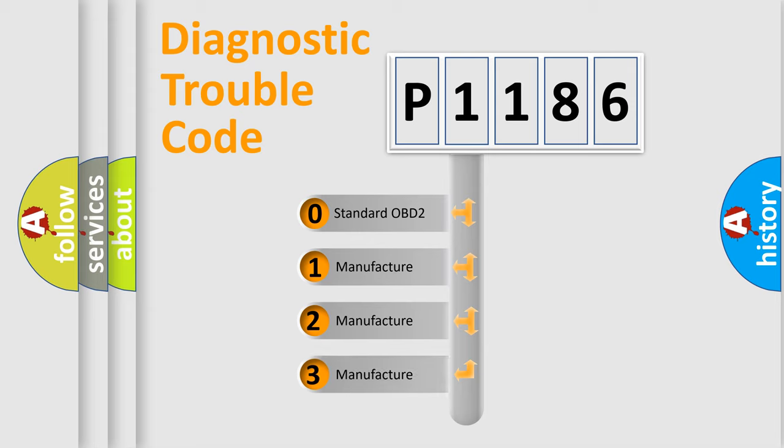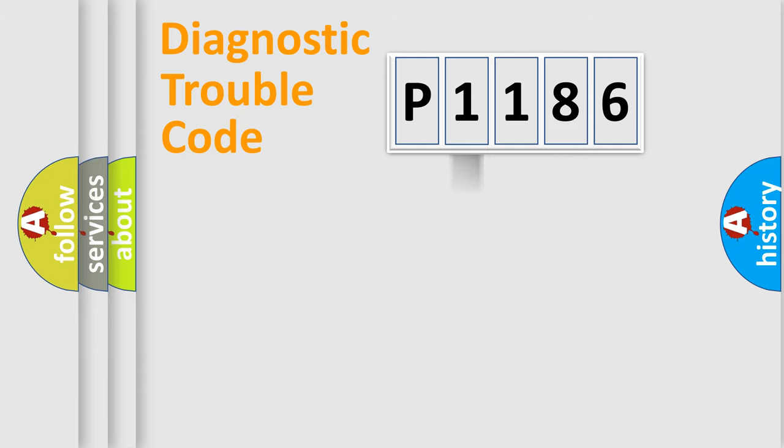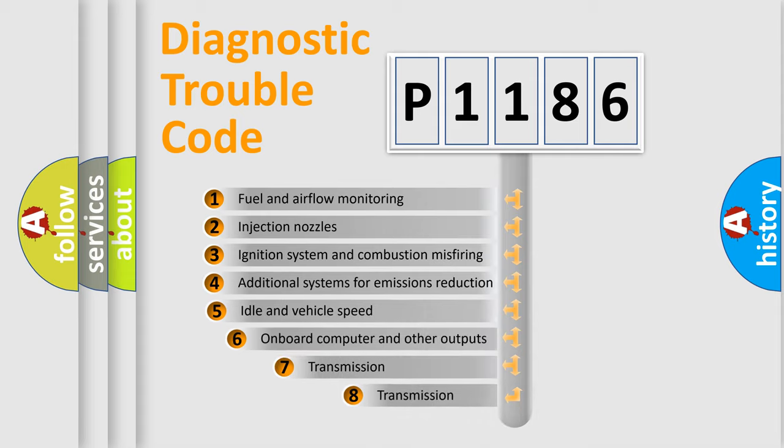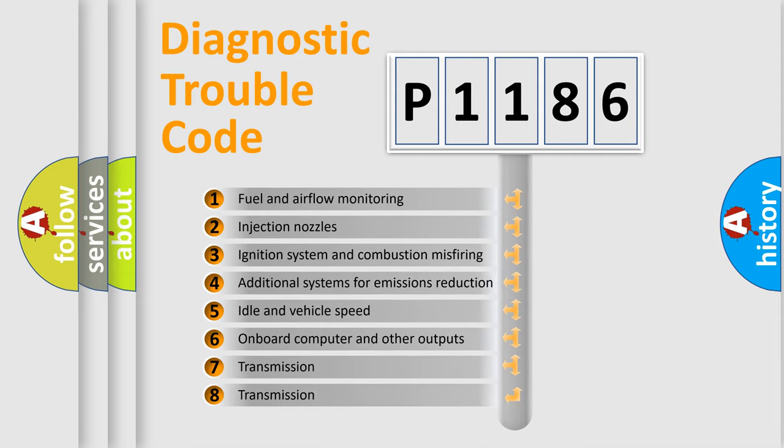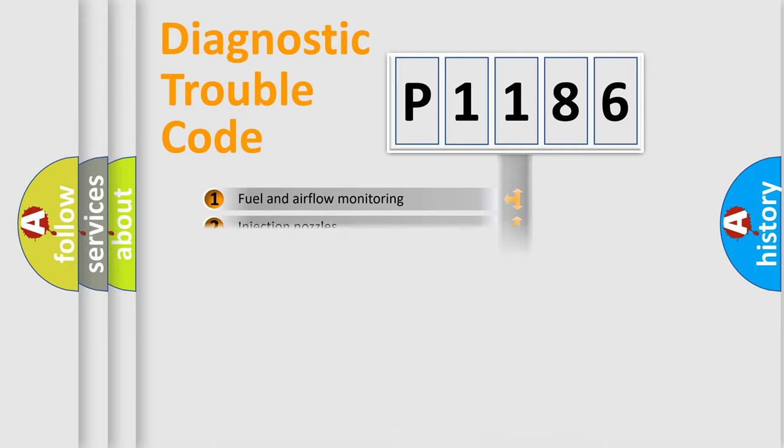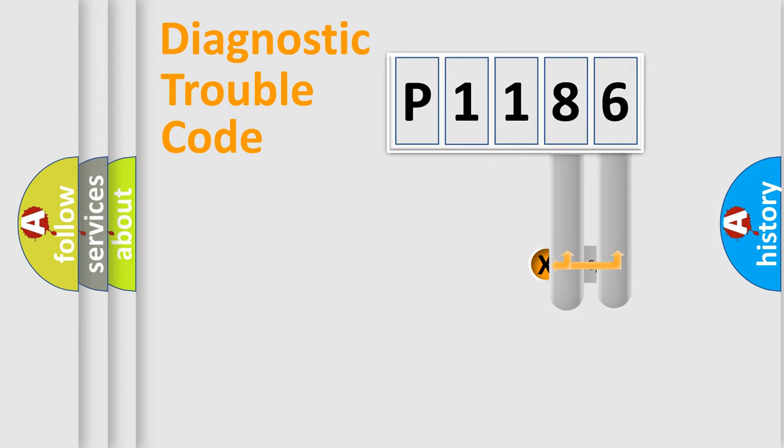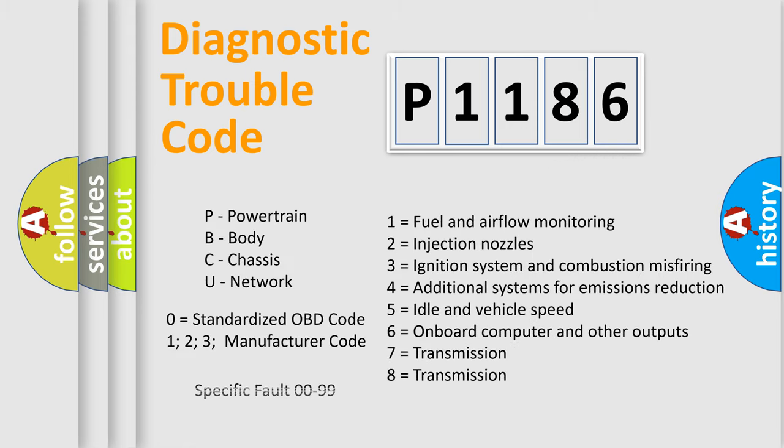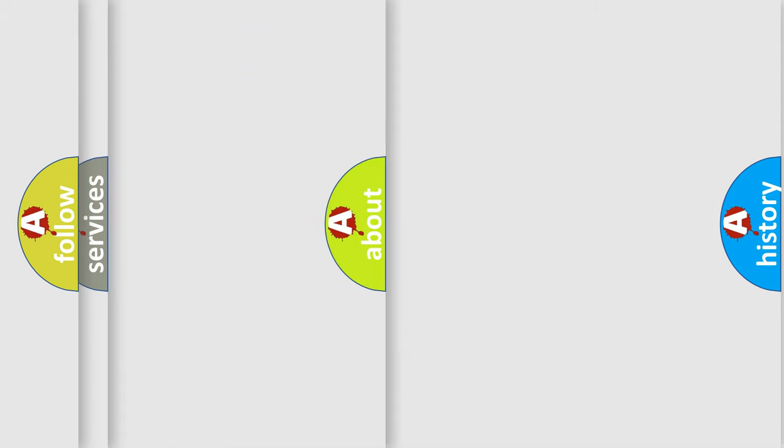If the second character is expressed as zero, it is a standardized error. In the case of numbers 1, 2, or 3, it is a manufacturer-specific expression of the car-specific error. The third character specifies a subset of errors. The distribution shown is valid only for the standardized DTC code. Only the last two characters define the specific fault of the group. Let's not forget that such a division is valid only if the second character code is expressed by the number zero.